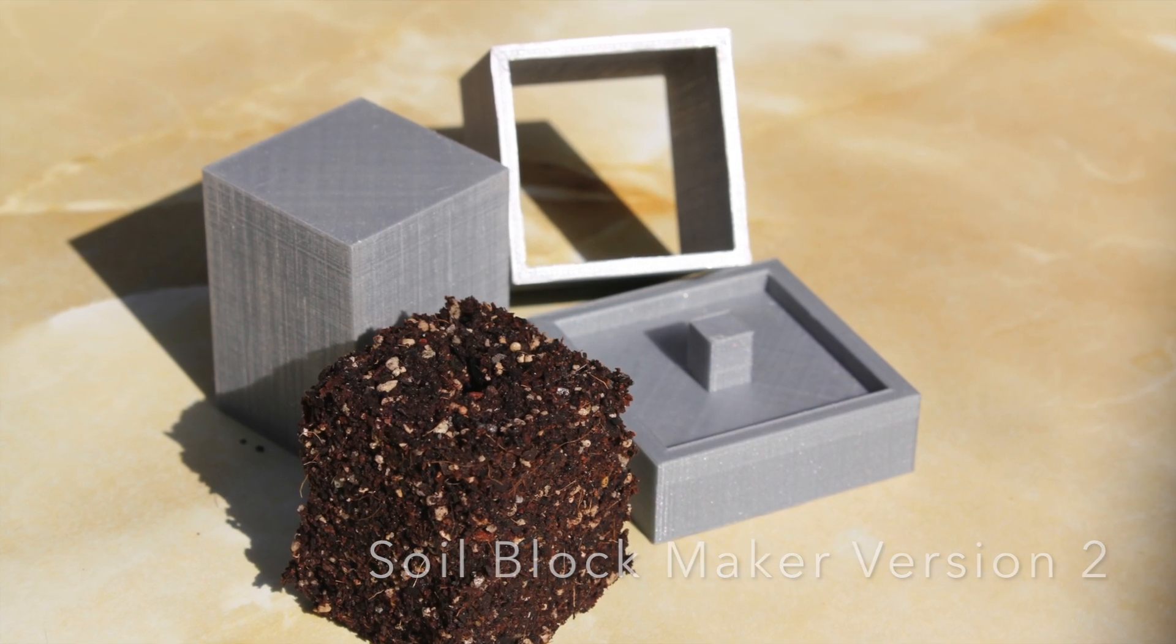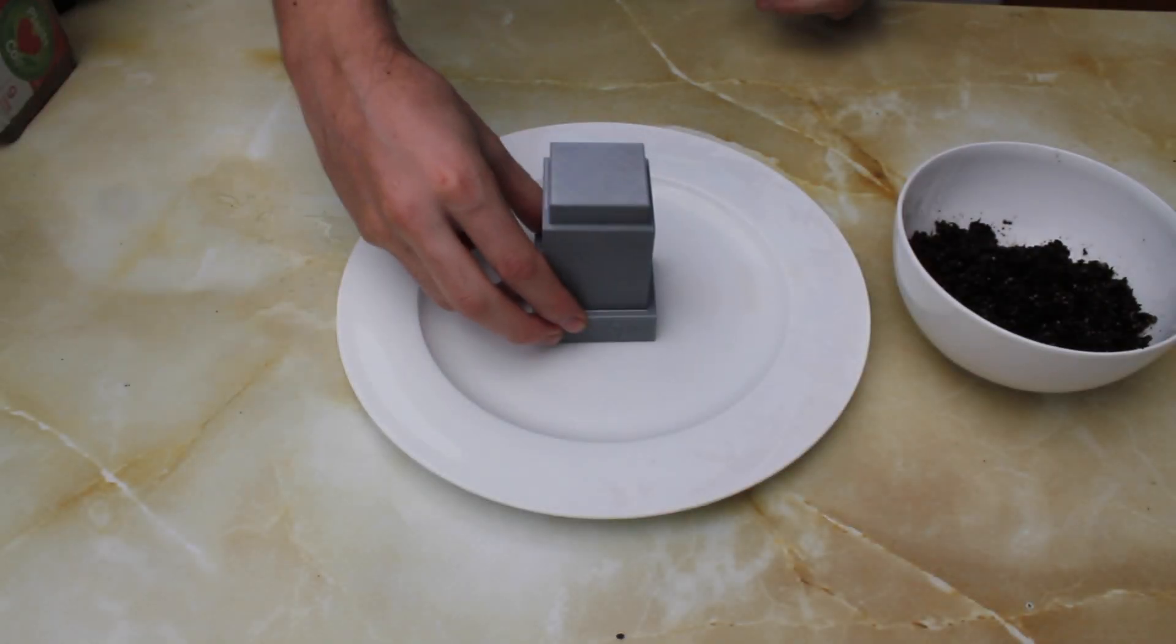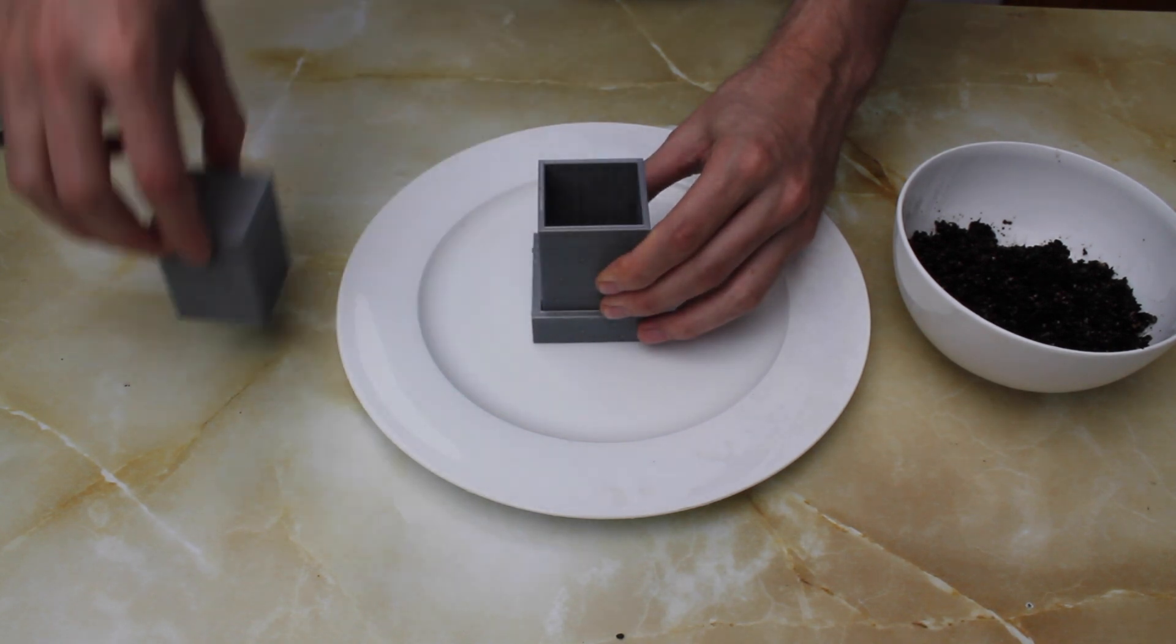It's now square rather than circular, so that I can fill a seed tray more efficiently. I've added a base plate that provides an indent for a seed to go into, and I've increased the thickness of the tamper to make it easier to tamp down.